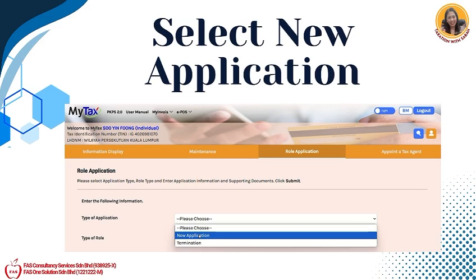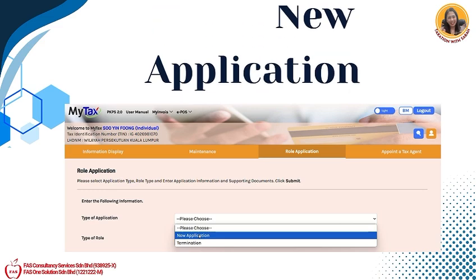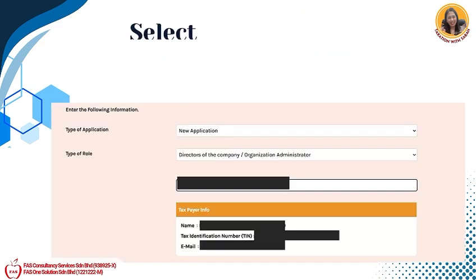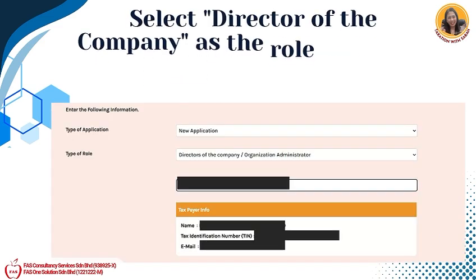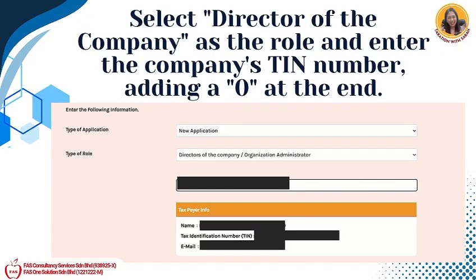Select New Application. Select Director of the Company as the role and enter the company's TIN number, adding a zero at the end.